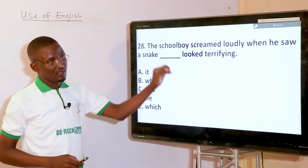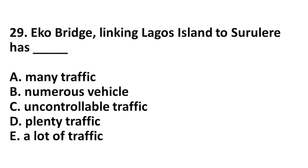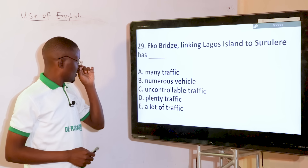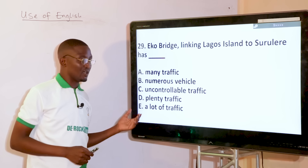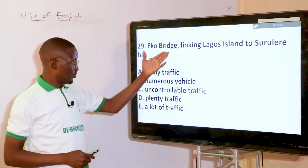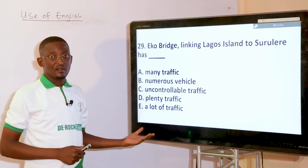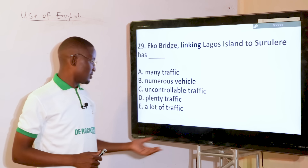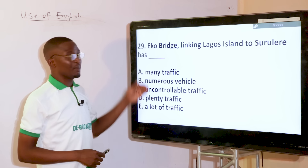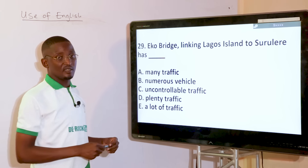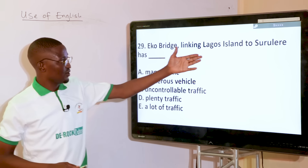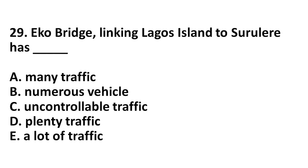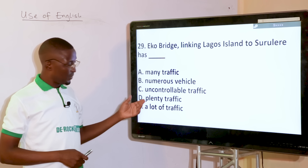A co-bridge linking Lagos Island to Surulere has dashed. Options: many traffic, numerous vehicle, uncontrollable traffic, plenty traffic, a lot of traffic. Traffic cannot be pluralized — it is one of those plural uncountable words. The answer is a lot of traffic — a co-bridge linking Lagos Island to Surulere has a lot of traffic — rather than many traffic, numerous, or plenty.